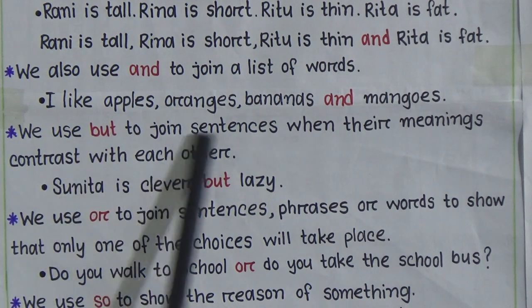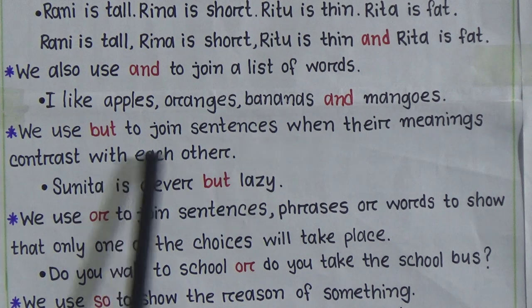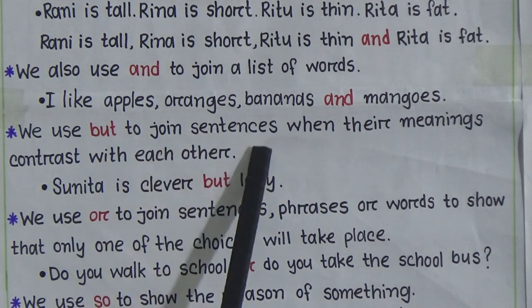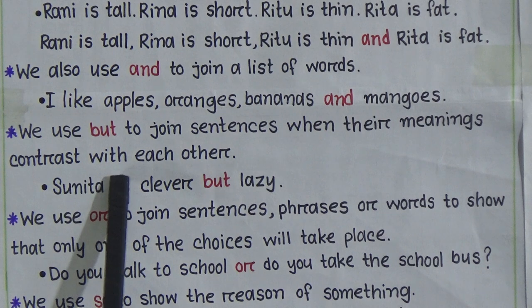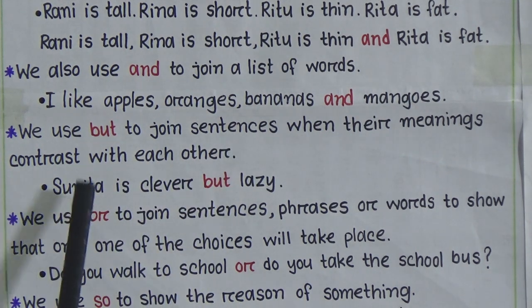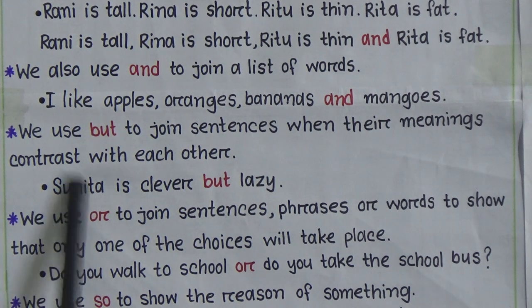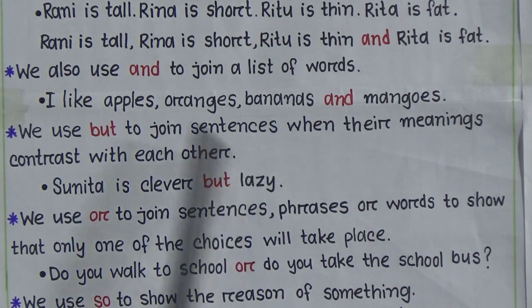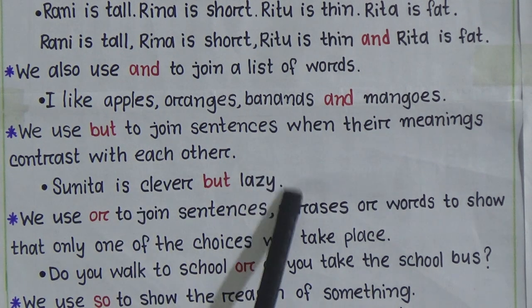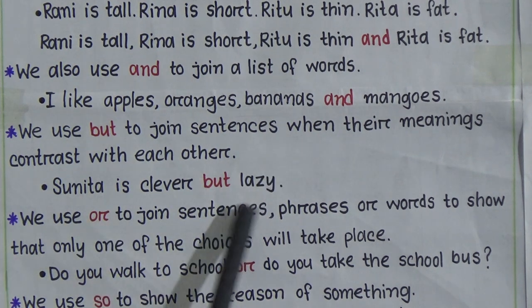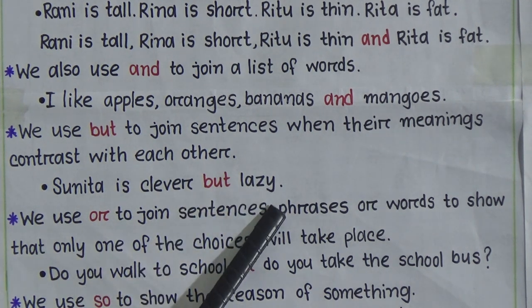Next: we use 'but' to join sentences when their meanings contrast with each other. For example: 'Sunita is clever but lazy.' Here we are talking about the girl Sunita's qualities - we say she is clever, but on the other side she is lazy. So when contrasting or comparing qualities, we use 'but'.